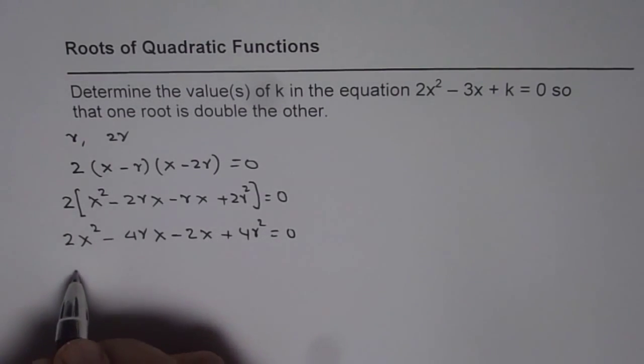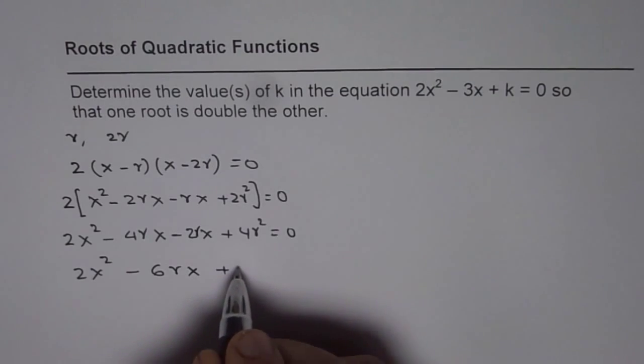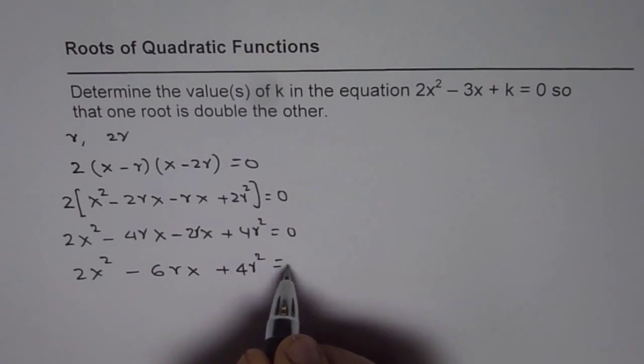And now, let me combine these terms, which I should have done earlier, right? 6rx, I missed r here, plus 4r squared equals to 0.